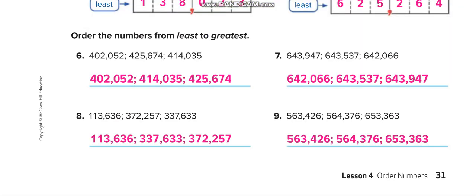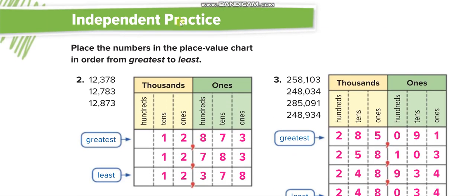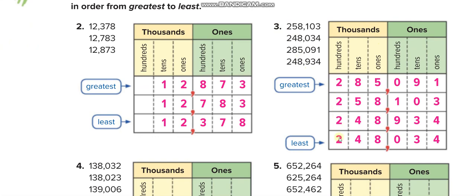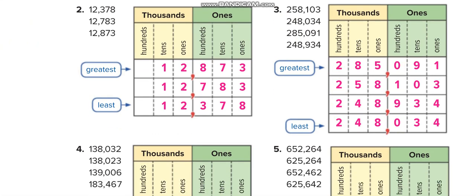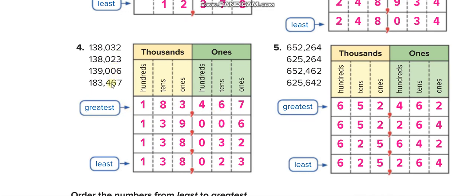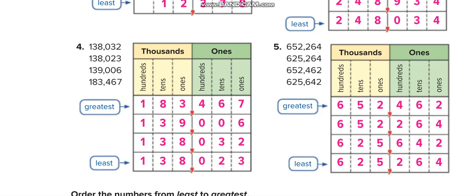Let's move to page 31: independent practice. They give you three numbers and want you to order them from greatest to least. On the first line, write the greatest one. For example, eight is greater than seven, so that is greatest, then seven, then three last. Similarly, for the next set of four numbers, order from greatest to least in the boxes — greatest on the first line, then next, next, and the least on the last line.